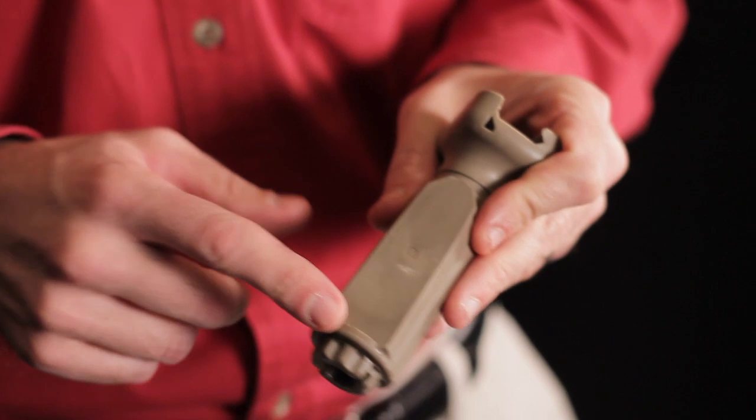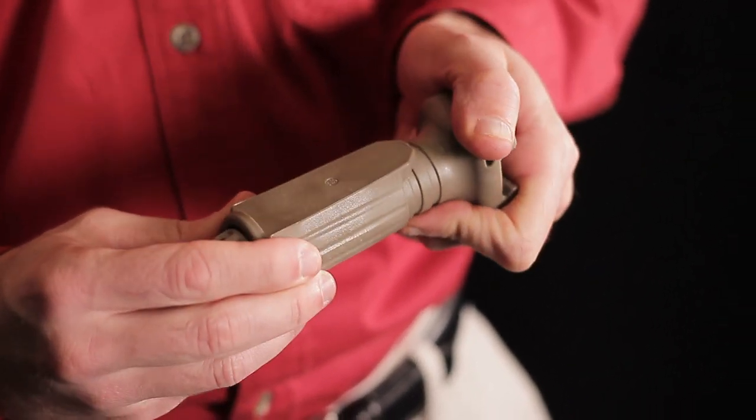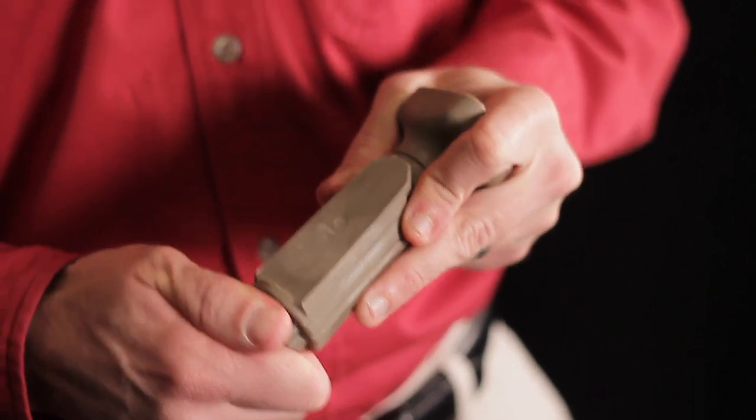When used as a full length grip, it does have a flat for a pressure pad for an illumination device. But it is adjustable. You can position that outer sleeve anywhere you want it.